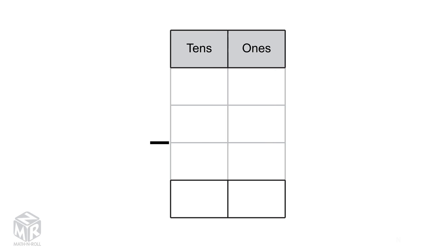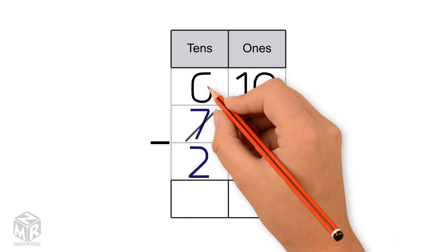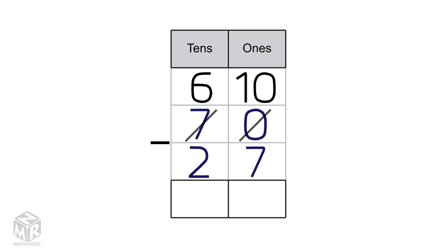Let's try another example: 70 minus 27. Pause this video to try to solve it on your own. We can't subtract 7 from 0, so we regroup one 10 for 10 1s. Now we have 10 1s and 6 10s. Subtract the 1s: 10 minus 7 equals 3.